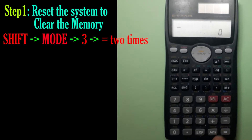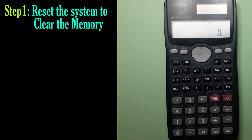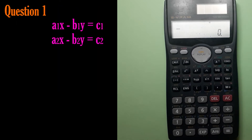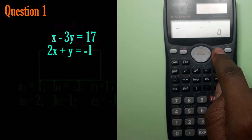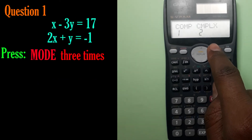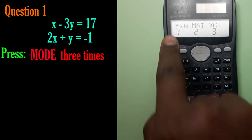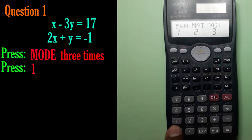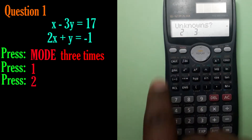Press equals, equals — two times. Now our memory is cleared and we can start our calculations. Go to mode, press one, three times. We see here 'equations,' so press one. How many unknowns do you have? Two.